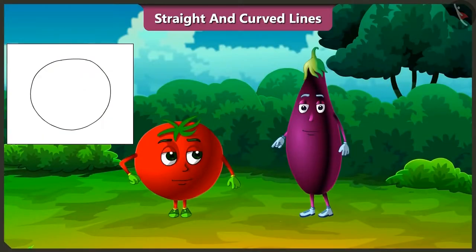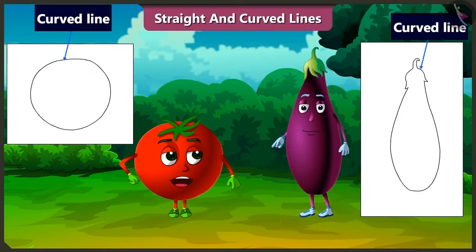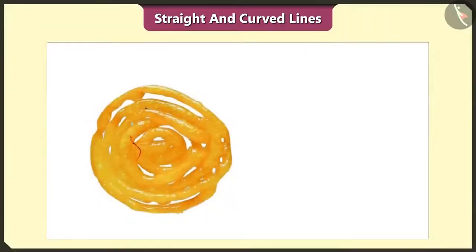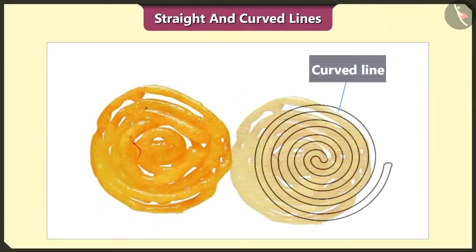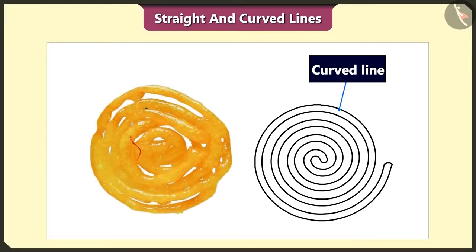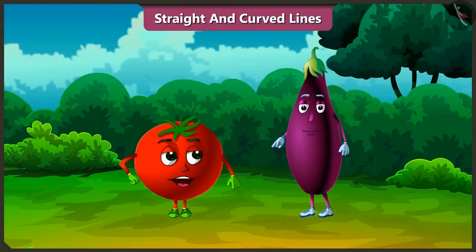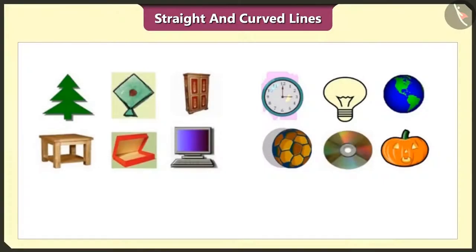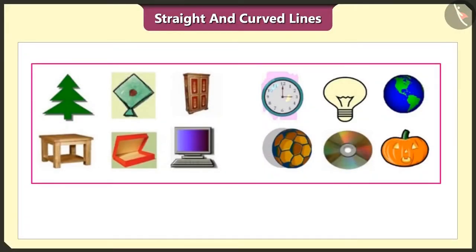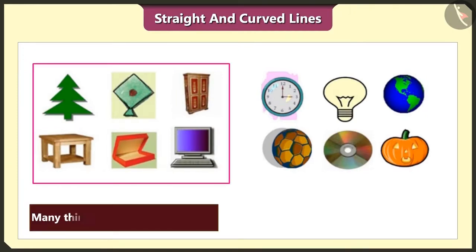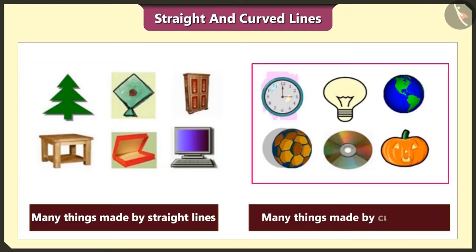Oh, Bingo! Did you notice? Both our shapes are also made up of curved lines. And jalebi is also made with curved lines. Oh, it is very interesting. Yes. Many objects in our surroundings are made with either straight lines or curved lines.